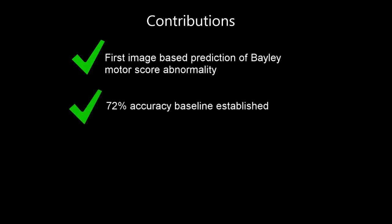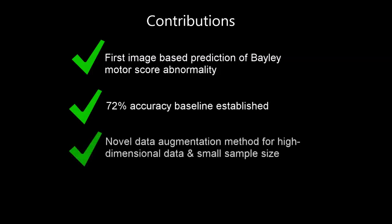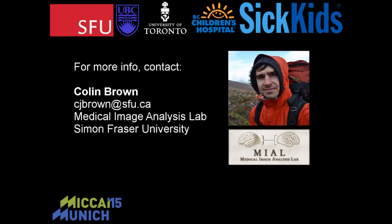In this work, we presented the first image analysis approach to predicting Bailey motor score abnormality, and we set a baseline prediction of over 70% for this important task. Furthermore, we introduced a novel method to generate realistic synthetic training data and mitigate the effects of small positive sample sizes common to normal abnormal datasets. To find out more, come visit our poster.